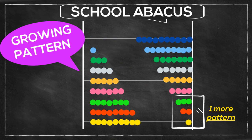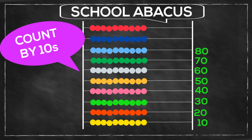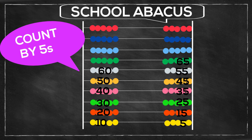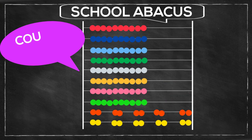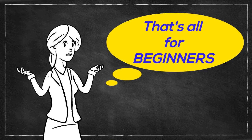Ask the child to count by 10 on the abacus: 10, 20, 30, 40, 50, 60, 70, 80, 90, 100. Move five beads on each side and make two columns, then ask the child to count by fives: 5, 10, 15, 20, 25, 30, 35, 40, 45, 50, and so on. Then move two beads each time and count by twos: 2, 4, 6, 8, 10, 12, 14, 16, and so on. That's all for the beginners.